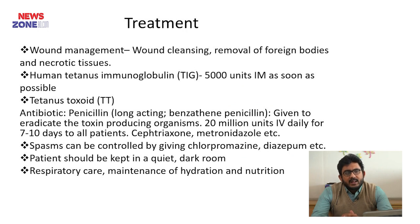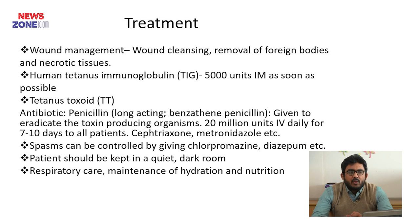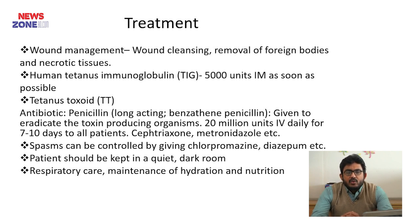Treatment includes wound management: the wound should be cleaned with removal of foreign bodies and necrotic tissue. Human Tetanus immunoglobulin 5000 units IM should be given as soon as possible, along with Tetanus toxoid. Antibiotic penicillin 20 million units IV for 7 to 10 days can be used for all patients. Ceftriaxone and metronidazole can also be used. Spasms can be controlled by diazepam. The patient should be kept in a quiet and dark room, with maintenance of hydration and nutrition.